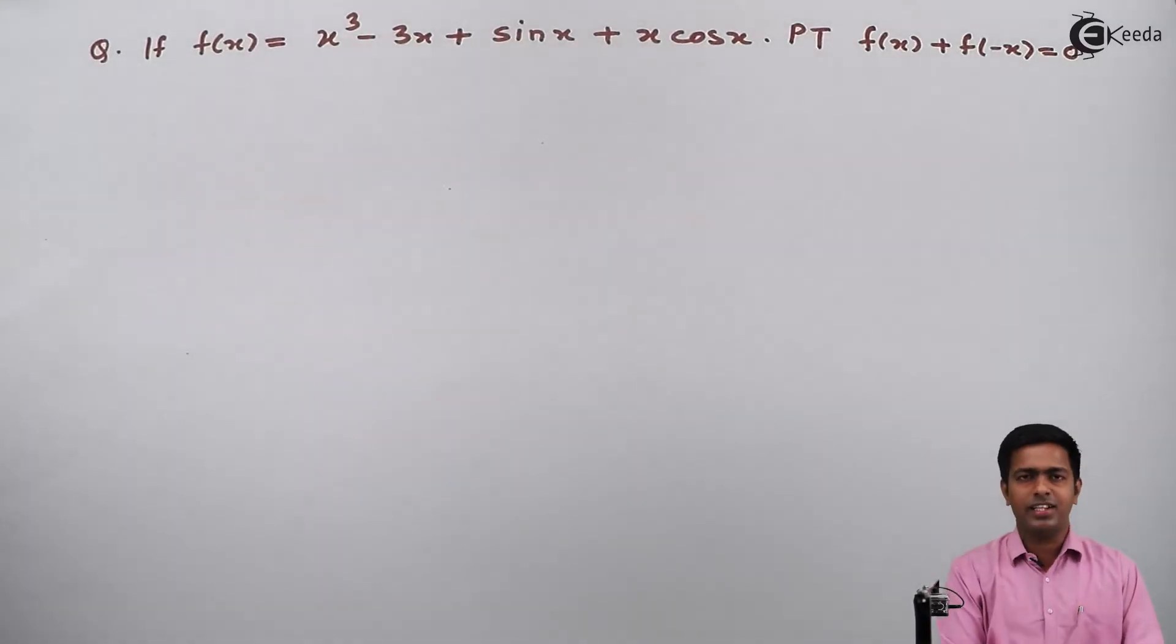Hello everyone. So here in this problem, f is given which is x cube minus 3x plus sin x plus x cos x, and we have to prove that f(x) plus f(-x) equals zero.